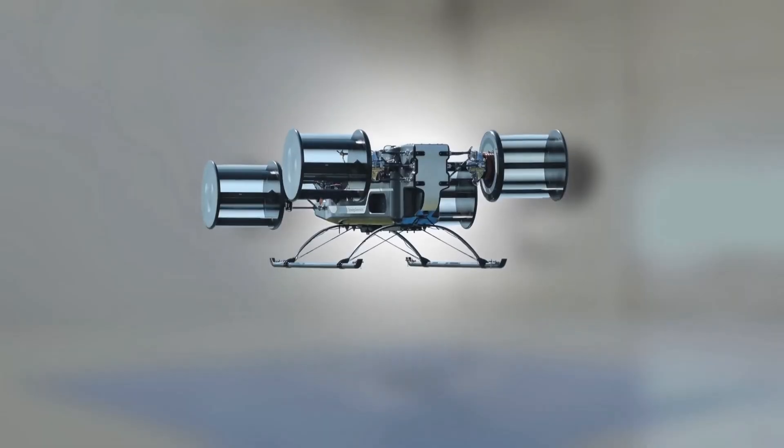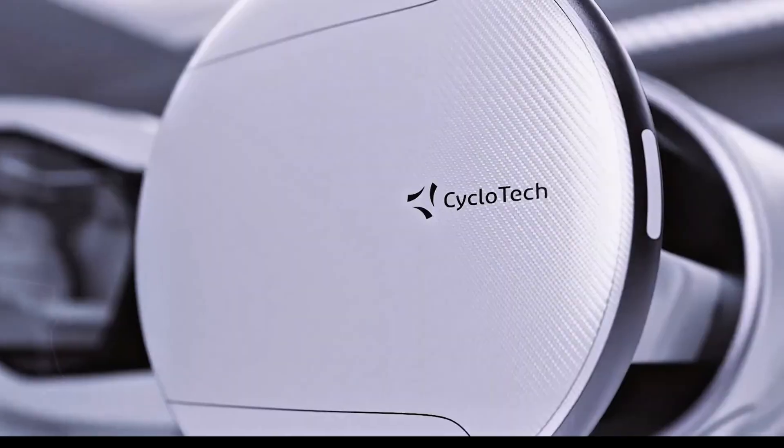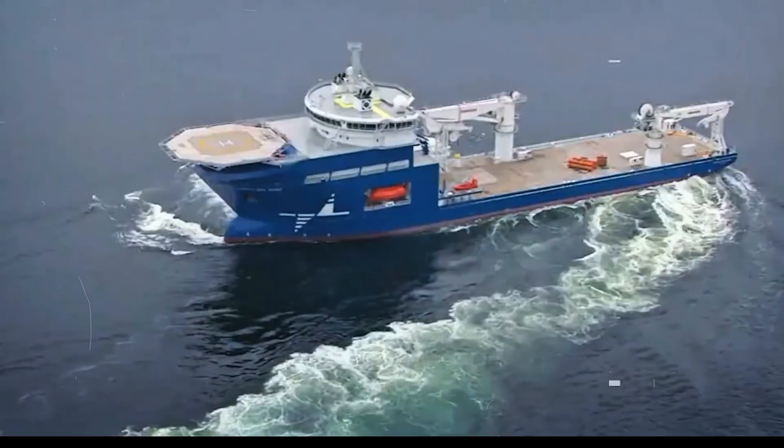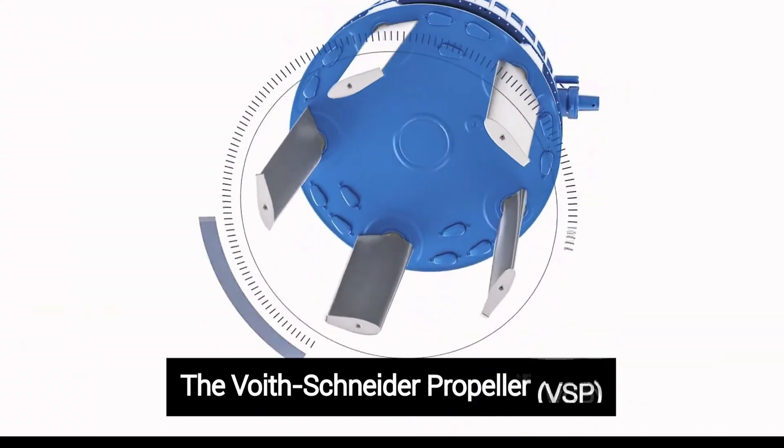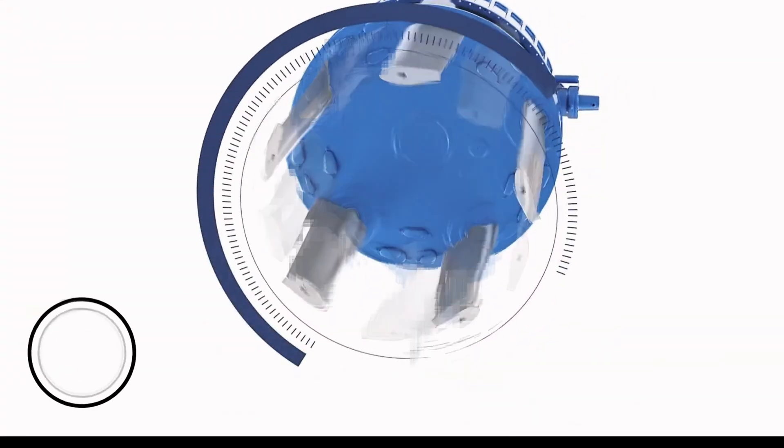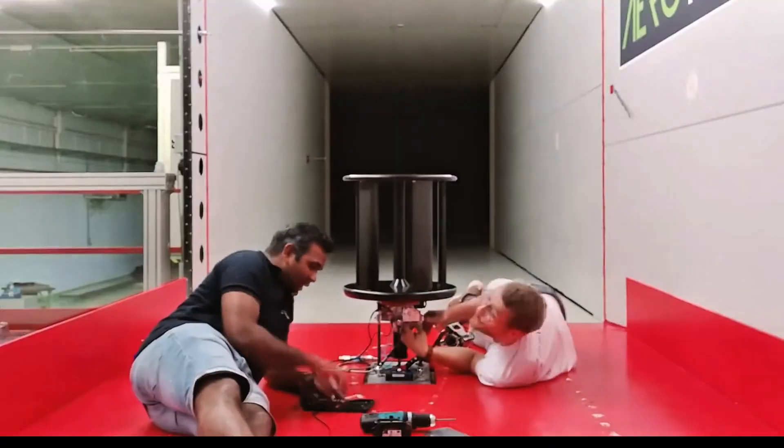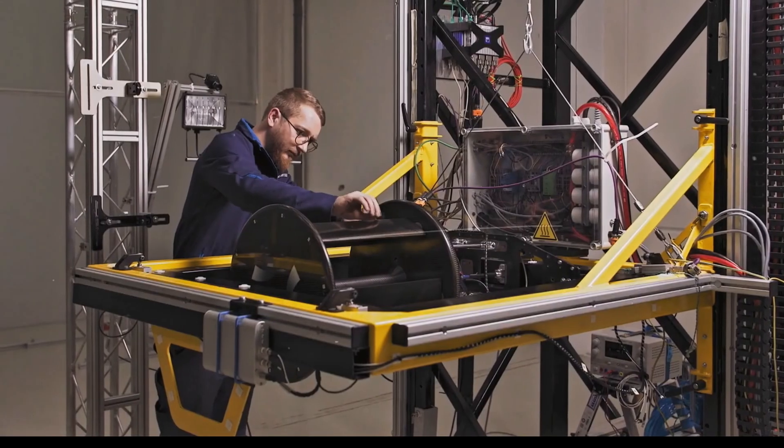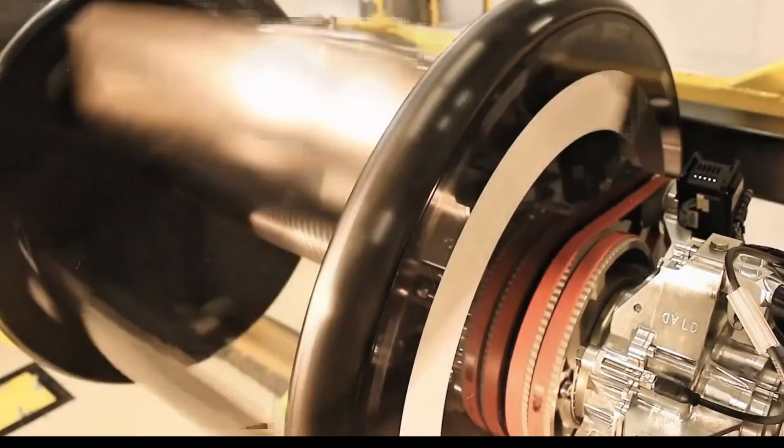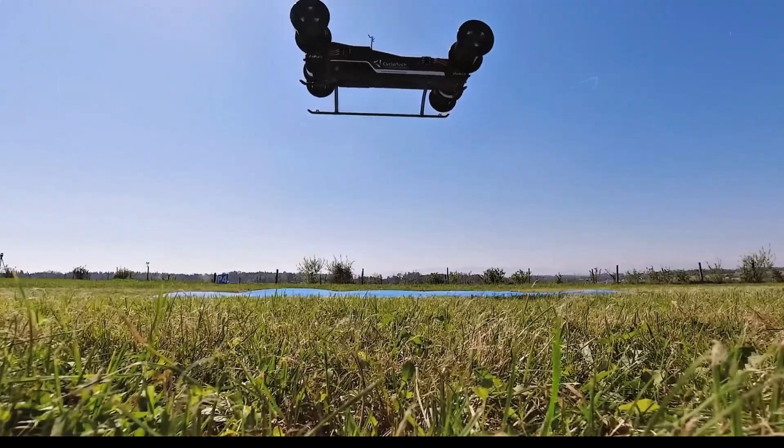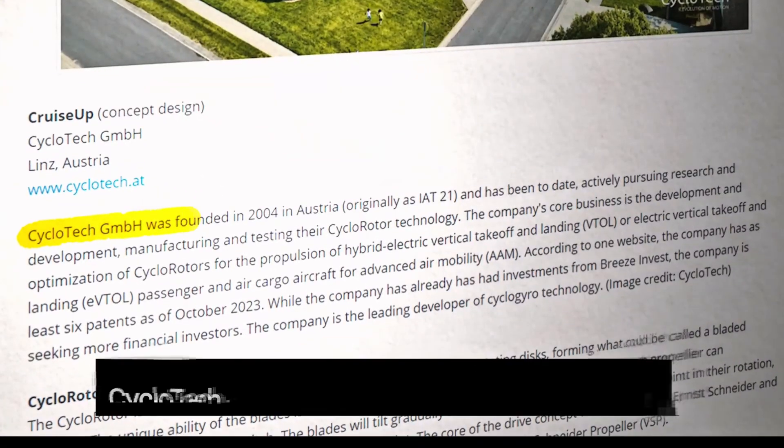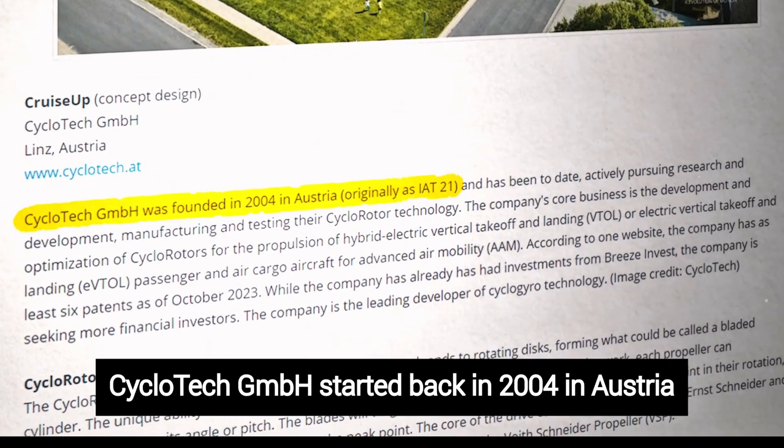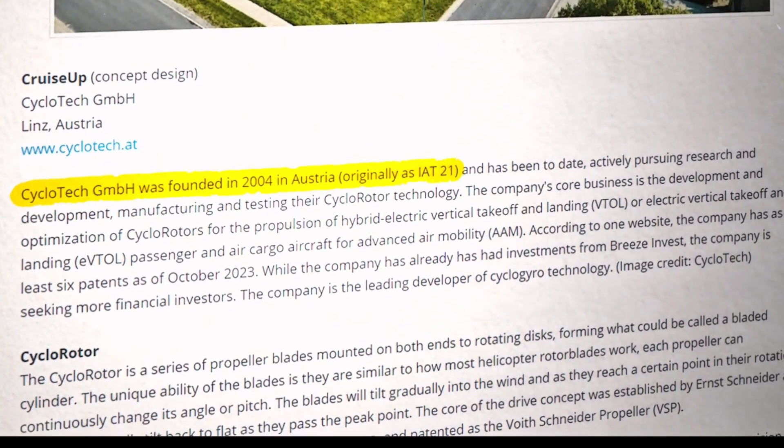In essence, everyone from NASA to startups loves that these props allow instant 360-degree thrust control. That means a helicopter that doesn't have to lean to move sideways, or a drone that can yaw and translate without skipping a beat. Cycloidal propellers in flight haven't taken over yet, but the technology is gaining ground. With modern electronics and green power, what once sounded like science fiction might become tomorrow's flight deck. Stay tuned, the future of aviation could be spinning right above our heads.